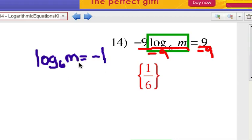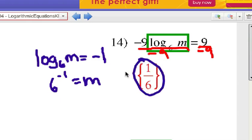So log base 6 of m equals negative 1. That means that 6 to the negative 1 power equals m, and that will give us 1/6. Remember, negative exponents bump things down to the denominator if they are already on top. So we're going to have some negative exponents to worry about here.